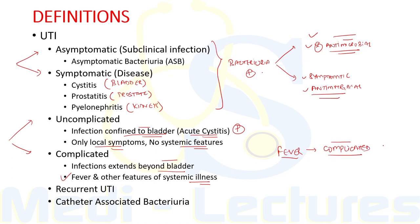The clinical implication of this distinction is that uncomplicated and complicated UTI differ in their treatment approach. Recurrent UTI is common in women and is not necessarily complicated. Catheter-associated bacteriuria can be asymptomatic or symptomatic — the term given to symptomatic catheter-associated bacteriuria is catheter-associated UTI, or CA-UTI.